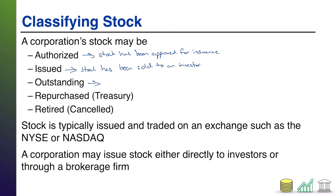Next up we have outstanding. Outstanding means the issued stock is still held by investors. You may be saying, well if issued means you sold it to an investor, and outstanding means it's still held by an investor, what else can there be? And that brings us to our next term.